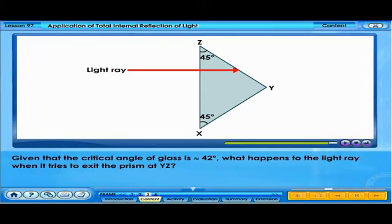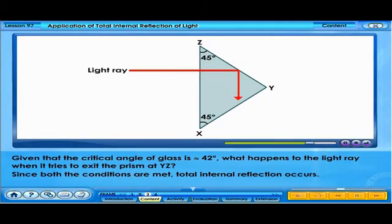Given that the critical angle of glass is 42 degrees, what happens to the light ray when it tries to exit the prism at YZ? Since both the conditions are met, total internal reflection occurs.